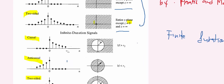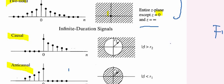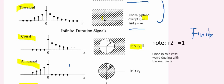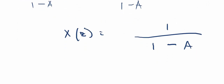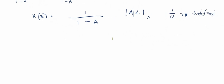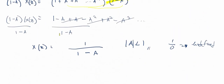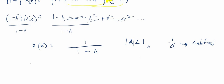The causal signal form is what we've established here. Remember this expression, as we will see it in Example number one. For Step 3, we substitute back with the original equation, giving us X(z) equals 1 divided by (1 minus (1/2)z raised to negative one).